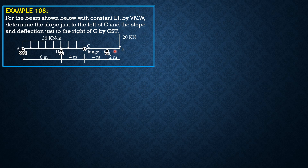First, let's consider segment CDE. Solving for R_D: summation of moments about C equals zero, so R_D times 4 minus 20 times 6 equals zero, giving R_D equal to 30 kilonewtons.